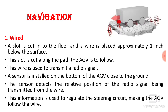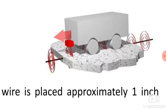Now we will discuss the various techniques used for navigating the AGV from one location to another. Its purpose is to deliver material at different locations. Because it is an autonomous vehicle with no driver, we need to understand how it is navigated. The very first technique is wired navigation.